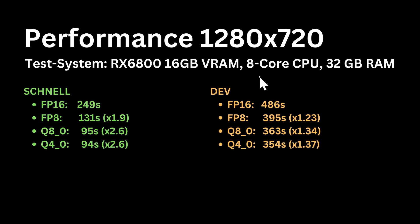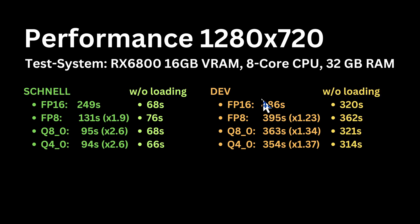Now let's look at the performance data. That's the resolution I used and this is my test system. The Q models are much faster, especially for Schnell but even for Dev — the performance is not bad at all. But here comes a surprise: this is only half of the truth. The statistics included the loading times of the models. As the new quantized models are much smaller, their loading times are faster, making them appear faster overall. But if we neglect the loading time, it's all more or less on the same level, both for Schnell and for Dev.